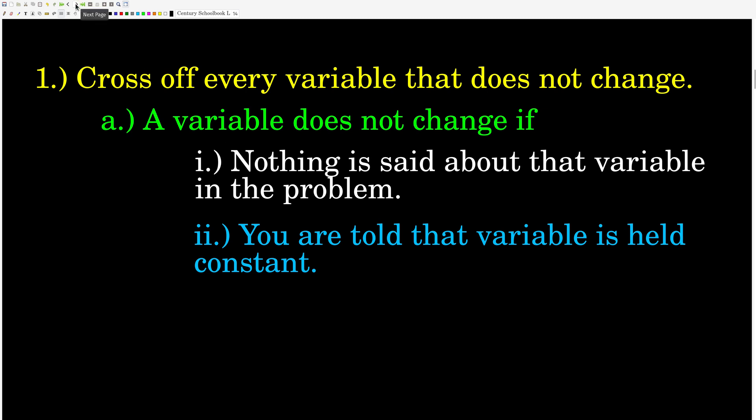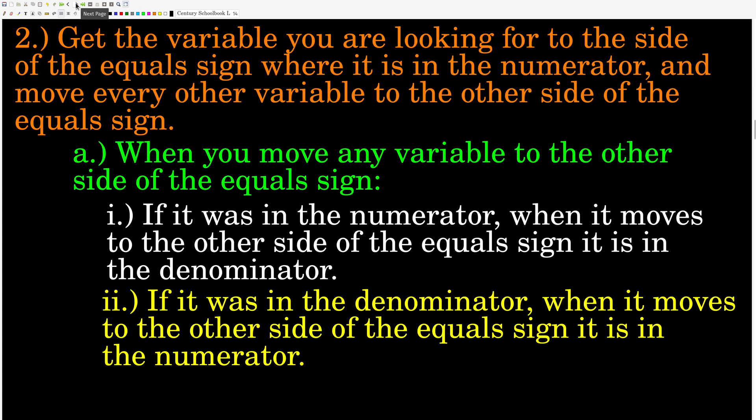So, once you do that, cross off every variable that does not change — get rid of it, take it out of the equation, throw it out, you don't need it. Next, whatever you're being asked to find, get that variable to the side of the equal sign so that it is in the numerator, and move everything else to the other side of the equal sign.